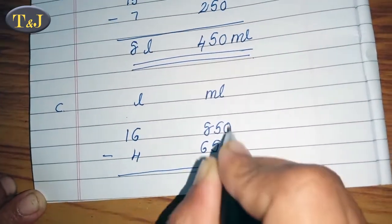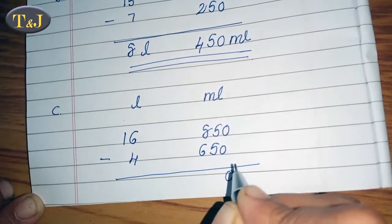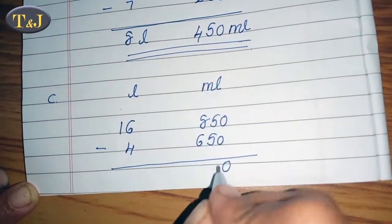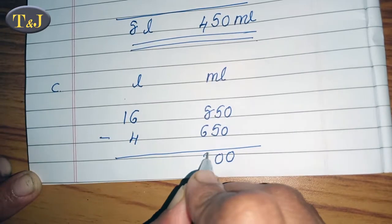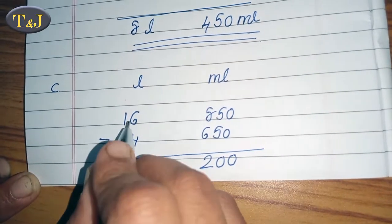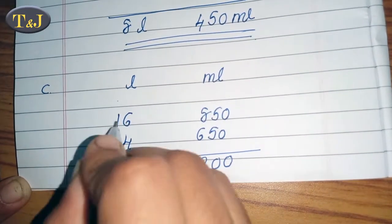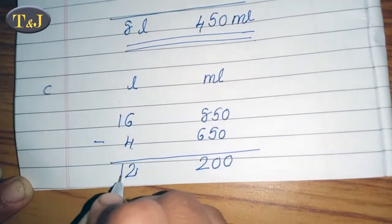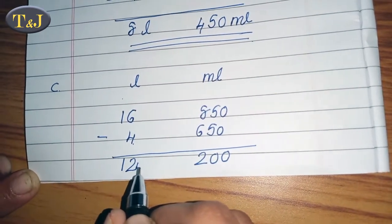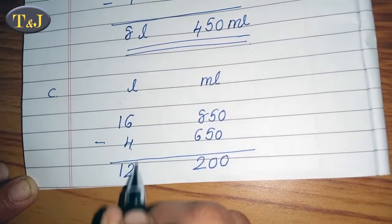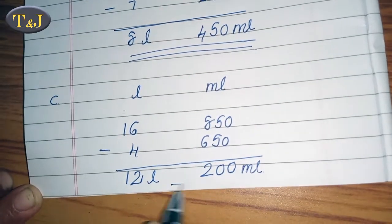Then 0 minus 0 equals 0, 5 minus 5 equals 0, 8 minus 6 equals 2, and 6 minus 4 equals 2, with a balance of 1. So the used petrol equals 12 liter 200 milliliter.